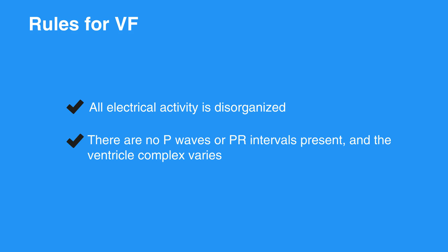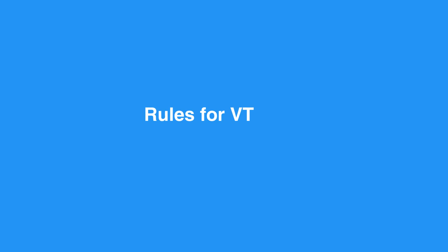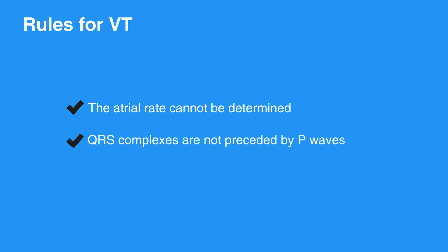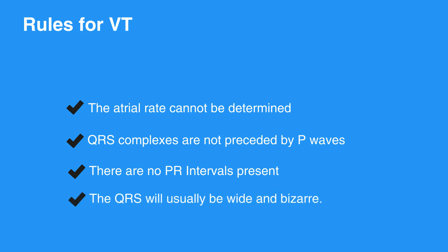The rules for VT include R-R intervals that are usually, but not always, regular. The atrial rate cannot be determined. The ventricular rate is usually between 150 and 250 beats per minute. QRS complexes are not preceded by P waves, though P waves are occasionally seen in the strip, they are not associated with the ventricular rhythm. There are no PR intervals present. The QRS complex measures more than 0.12 seconds and will usually be wide and bizarre. It is usually difficult to see a separation between the QRS complex and the T wave.